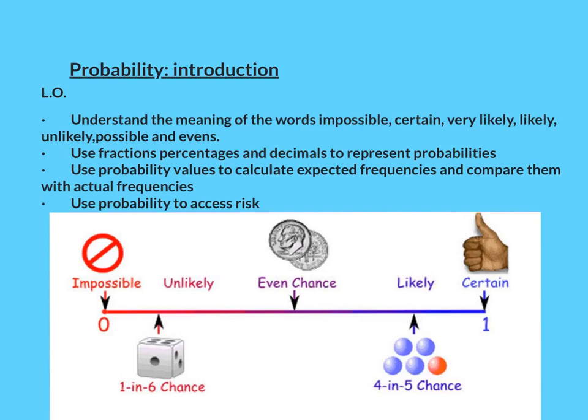We've got an impossible event, if that was a number it would be zero, and we've got a certain event, if that was a number it would be one, definitely going to happen. An even chance, and then you'd have unlikely and likely, and you could also have things like very likely and possible. There are a few different words you could have.